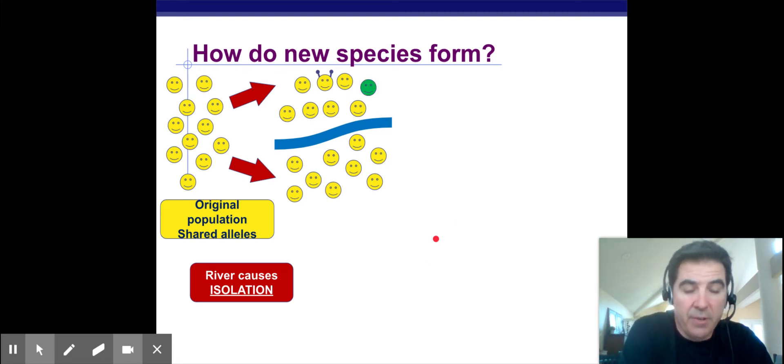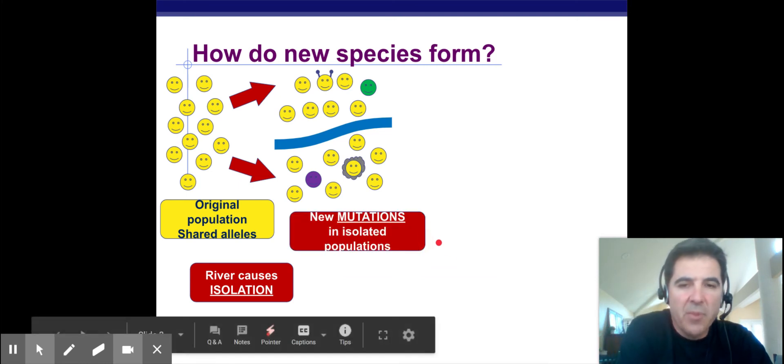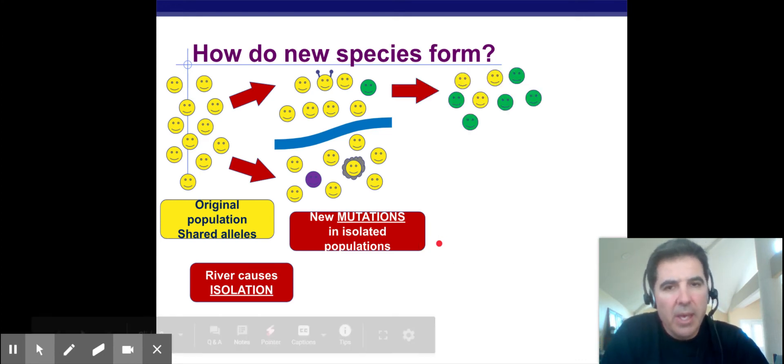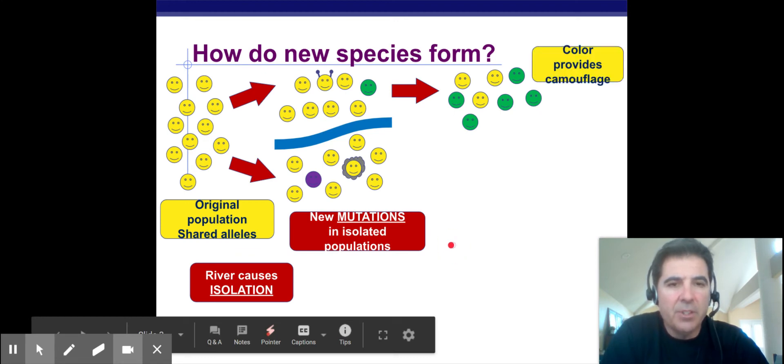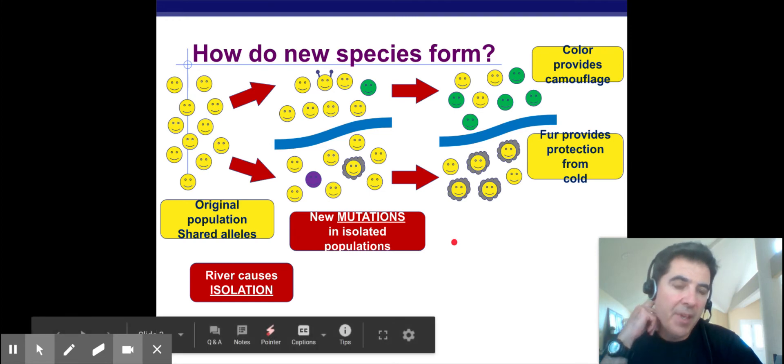So interbreeding is impossible. Over time there's a mutation of antennas, there's a mutation of a green color, there's a mutation of a purple color, and there's a furry one. So over time these mutations will be isolated because the mutations are just genetic mutations and whatever happens on one side of the river might not happen on the other side. So now over time you've had these new mutations.